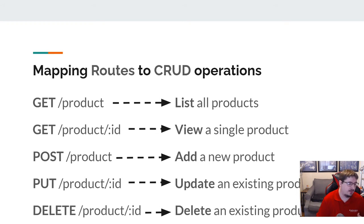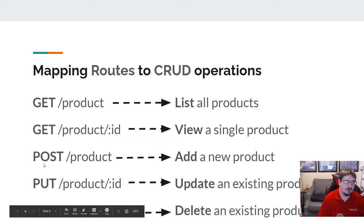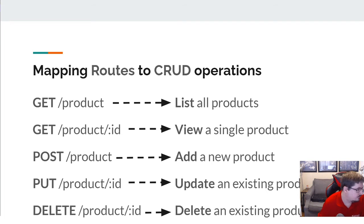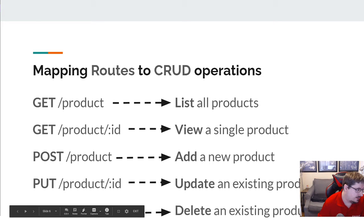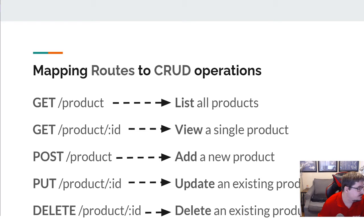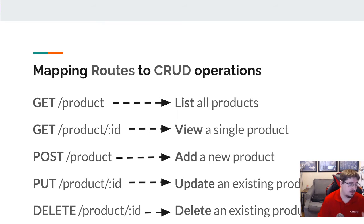Finally, to delete a product, I would say DELETE /product/:id. So I've mapped all of these actions so I can do all four CRUDs going to the product/:id path just with a different HTTP method. As for whether GET, POST, PUT, and DELETE have to be those words — yes, because those are the words that exist in HTTP. You can't use get, add, update, remove. Those words don't work. It has to be GET, POST, PUT, and DELETE because that's what's part of the HTTP protocol.